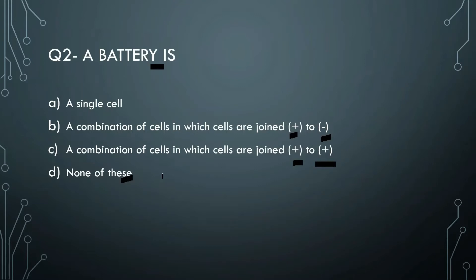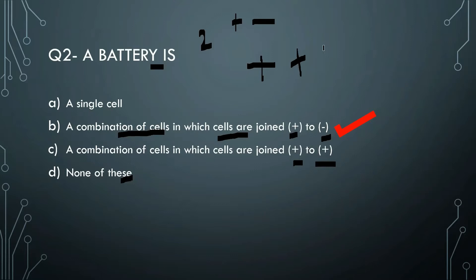If we connect terminal to plus and plus, electricity will not flow. We need to connect plus and minus to generate electricity with the battery. That is why the combination of cells is joined plus to minus in a battery.